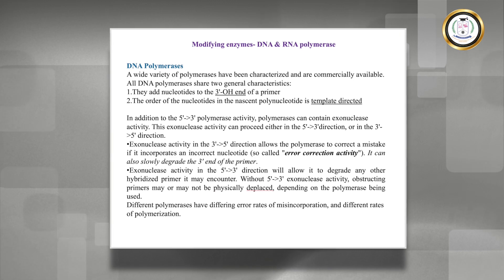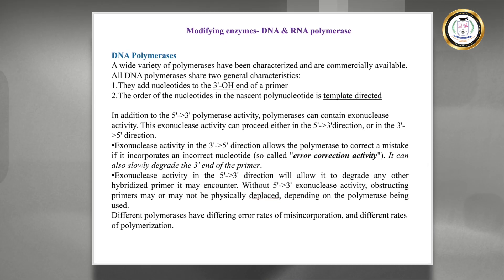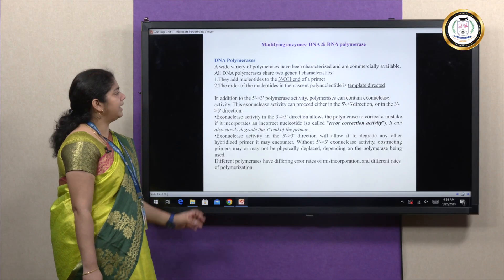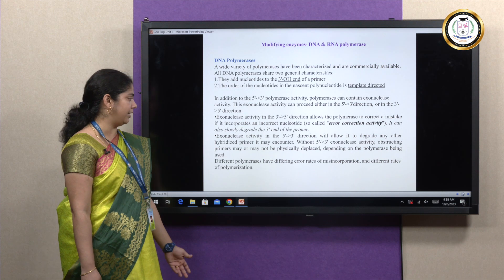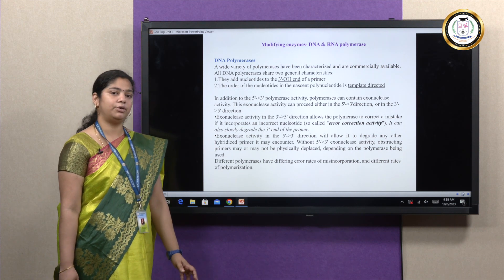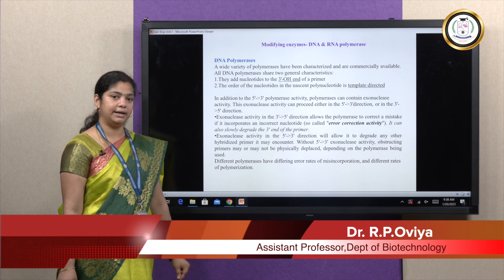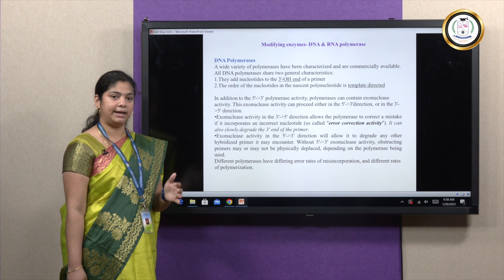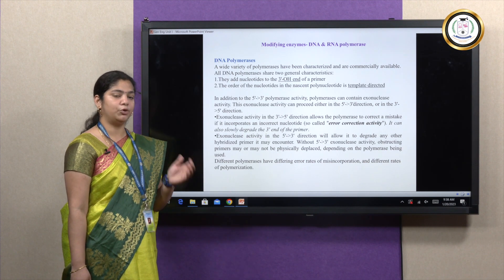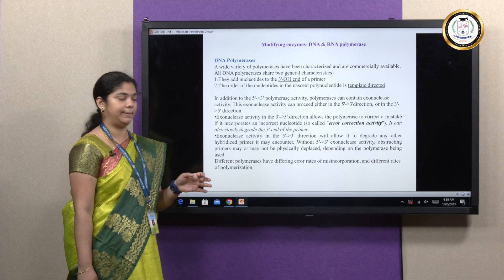Then we can see the other modifying enzymes that are used in recombinant DNA technology in which DNA polymerase plays a major role. DNA polymerase has two types of activity: exonuclease and endonuclease activity. It is also useful in proofreading. Polymerase requires a template—a template DNA sequence is essential so that it can keep adding a new base pair using a primer and it keeps adding to the 3'-OH end of the template.